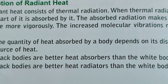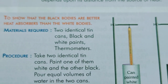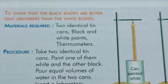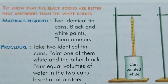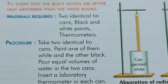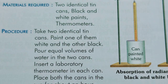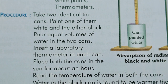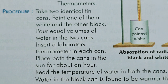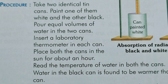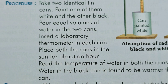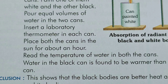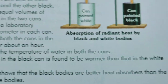We will now do an activity to show that black bodies are better heat absorbers. For this activity we need two identical tin cans — one painted black and another painted white — and a thermometer. Pour equal volumes of water into both cans, then insert a laboratory thermometer in each. Place both cans in the sun for about an hour, then read the temperature of water in both cans. We can see that the water in the black can is warmer than that in the white can.